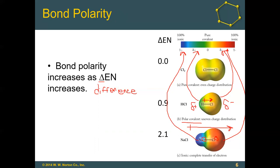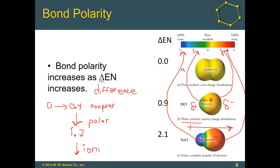We can differentiate bond types by the electronegativity difference: 0 to around 0.4 is nonpolar covalent. Above 0.4 to around 1.7 (some say 1.8) is our polar covalent range. Greater than 1.7, certainly greater than 2, gives us an ionic bond where electrons move completely from one side to the other, creating ions rather than a shared covalent bond.